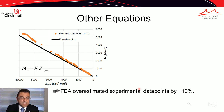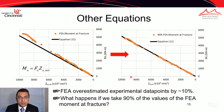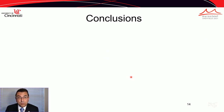Recall that the FEA model overestimated the experimental data points by about 10%. When we took 90% of the FEA moment-at-fracture values and compared them against equation 11, we obtained a very good fit with an average error of 2.7% and a standard deviation of 2%.